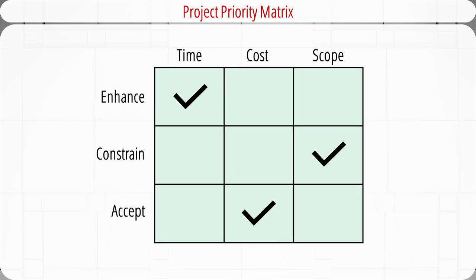The project manager needs to review the priority matrix introduced in a previous video to determine which case fits their project. In this example, the scope is constrained, meaning it is fixed and cannot be changed. Time is enhanced, meaning the project manager should take advantage of every opportunity to shorten the schedule. Cost is accepted, meaning it's acceptable to go over budget to preserve project quality. There are likely natural limits to how much managers can constrain, enhance, or accept any one criterion.